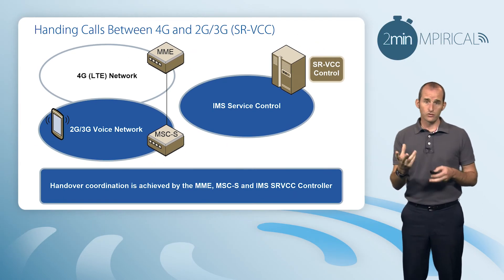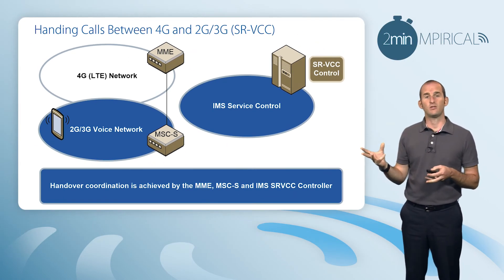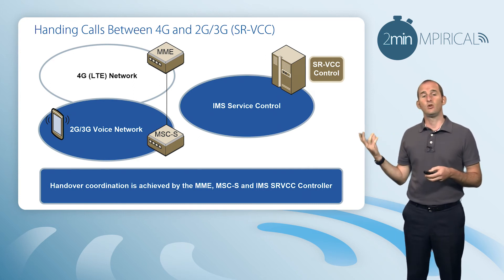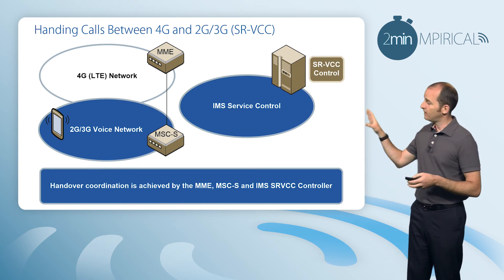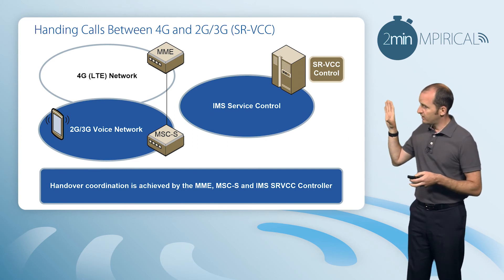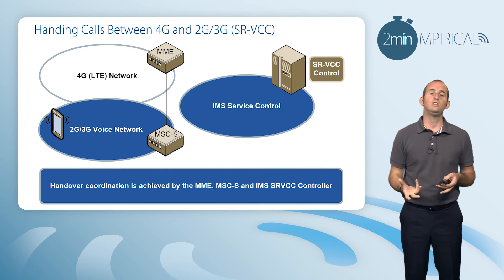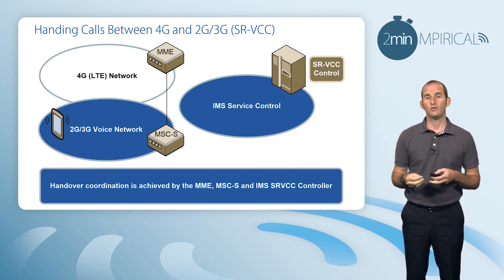Once those two things fall into place — we've set up the 2G or 3G access network and redirected our voice away from 4G towards 2G or 3G — then our voice session can continue within our 2G architecture with a seamless handover taking place.